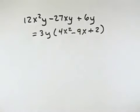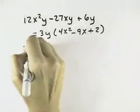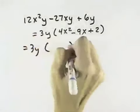So now we look at the trinomial that we're left with, the three terms, and we want to see if that can break down any further. So we've got our 3y, we break down our two parentheses.